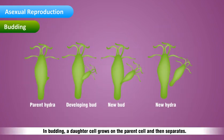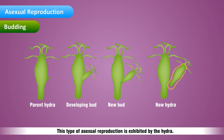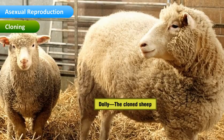Budding: in budding, a daughter cell grows on the parent cell and then separates. This type of asexual reproduction is exhibited by the hydra.